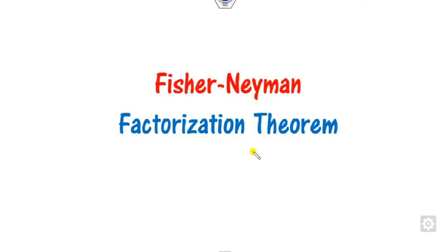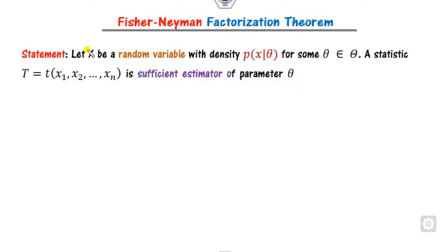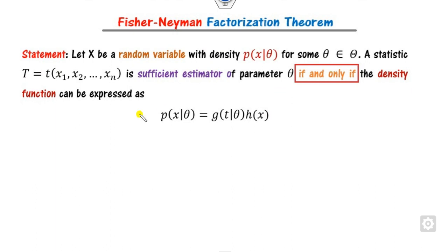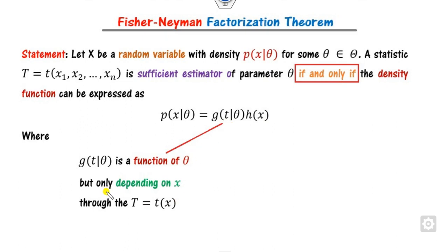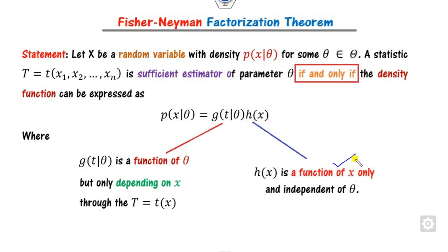Now, what is the Fisher-Newman factorization theorem? The statement is: if you have a random variable X whose density function p depends on parameter theta, then any statistic T is a sufficient estimator if and only if the density function can be expressed as a product of two functions G and H. G is a function of theta and T (where X appears only through the statistic T), while H(x) is a function of x only, independent of theta.